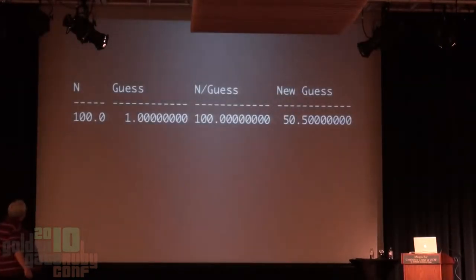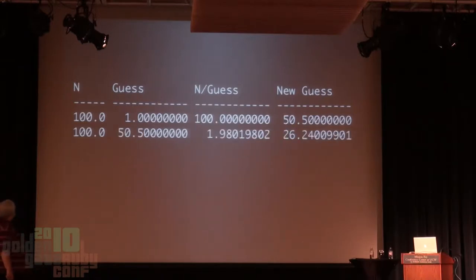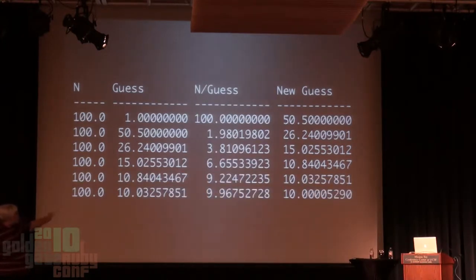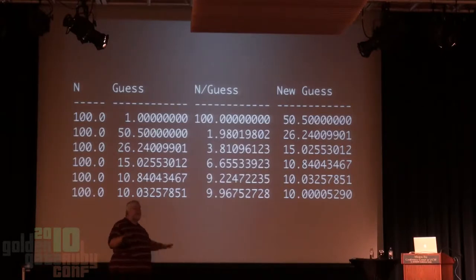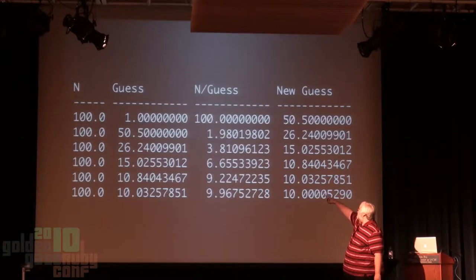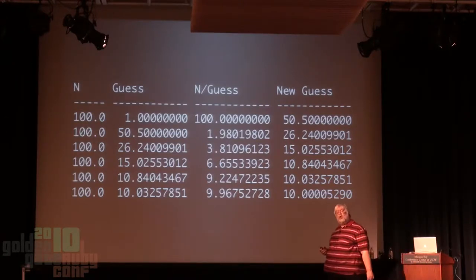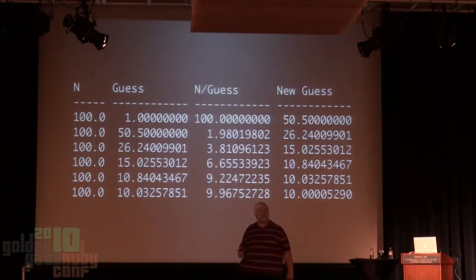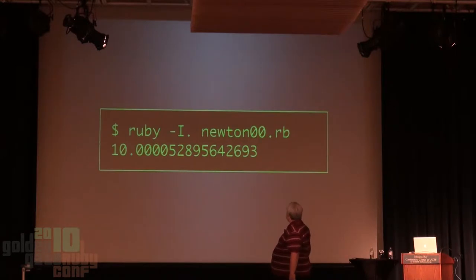If we run square root of 100, the first iteration our guess is 1, n divided by guess is 100, so the new guess is the average of those two: 50.5. Next iteration our guess is 50, and the new guess is about 26. Then 15, then 10, then 10.03, then 10.0005. You can see we're zeroing in on 10, which is the square root of 100. That's six iterations, and we got a very good estimate. This is called the Newton approximation method for square roots, and it converges very quickly.